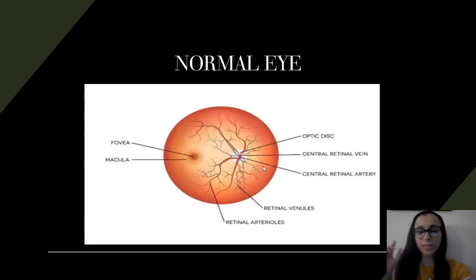So here's a normal eye. When you're looking into someone's eye, this is what you should see. You should see the optic disc, it should be sharp, it should not be enlarged, no swelling. You should be able to see the macula, which is over here, and the fovea is in the middle of the macula. The macula is responsible for central vision.